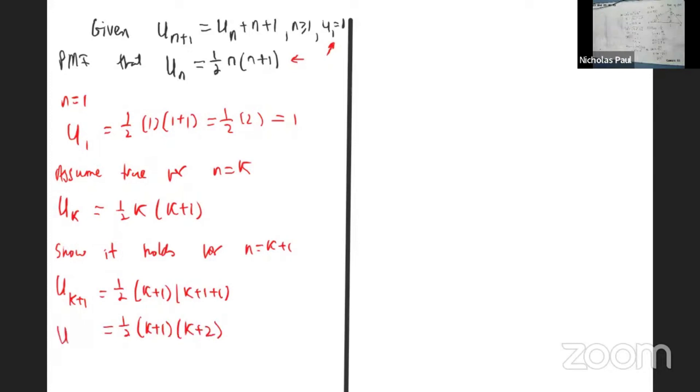Again, I like to highlight what you're trying to prove, so we're trying to prove this here. Now we're going to use what we're given, so we're going to use U_{k+1} as Uₖ plus k plus one.